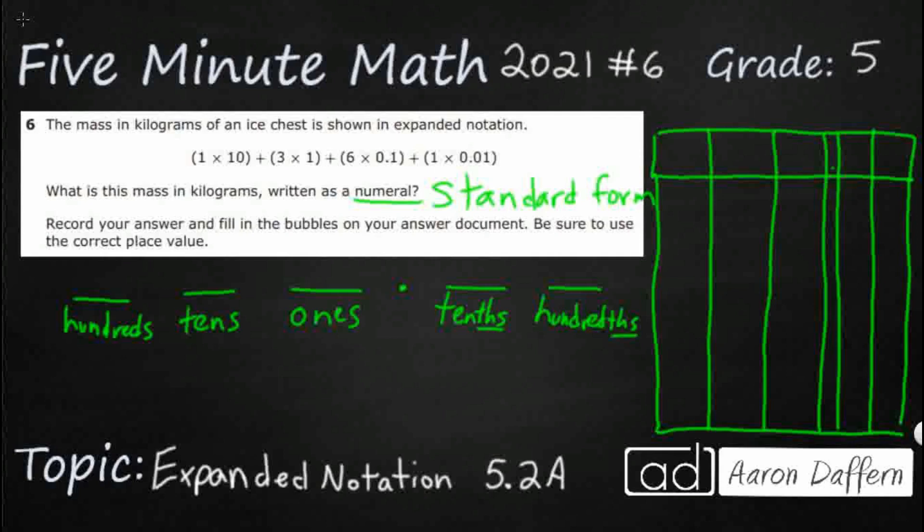Now, once we have our place value chart like this labeled with the place values, now it's one more step, and it's going to be pretty easy to turn this expanded notation into standard form. What we're going to do is write the value of each of these places. One is going to be one. Ten is going to be ten. Hundreds is going to be a hundred. Tenth is going to be 0.1. Hundredth, 0.01.